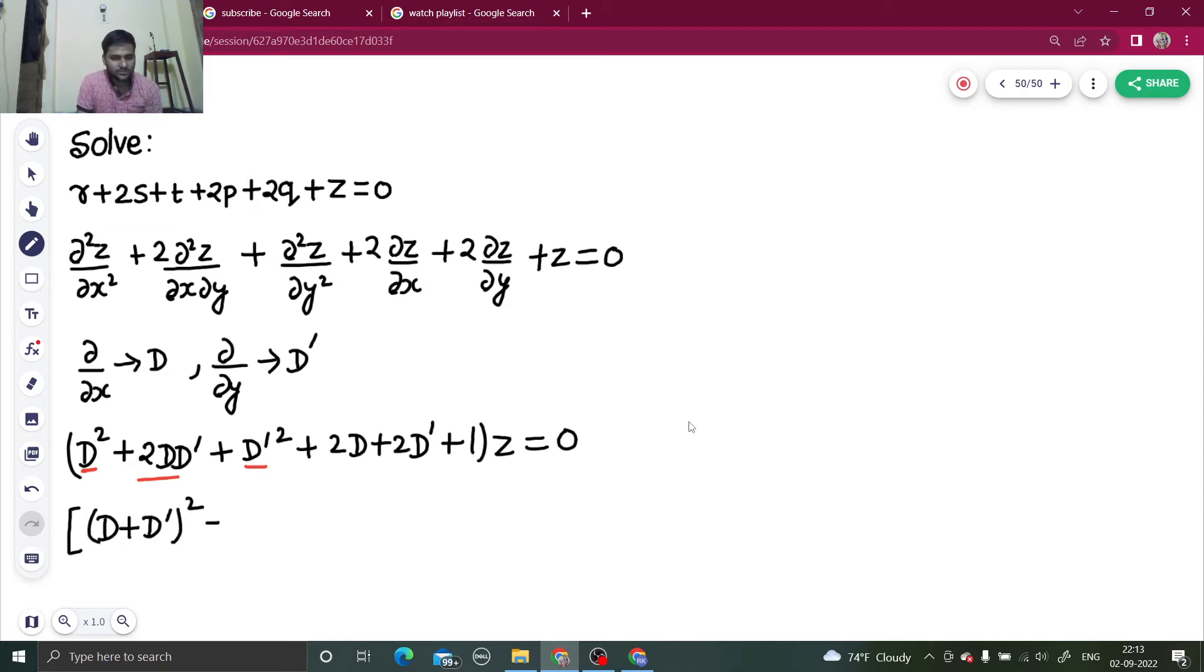So they are making D plus D dash whole square. From the next two terms I am taking two common, so D plus D dash, I am writing the last one as one square.